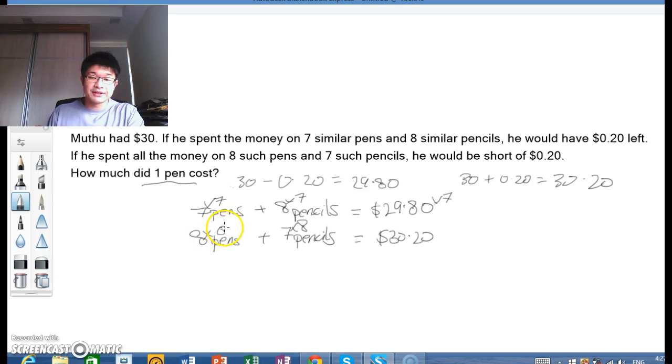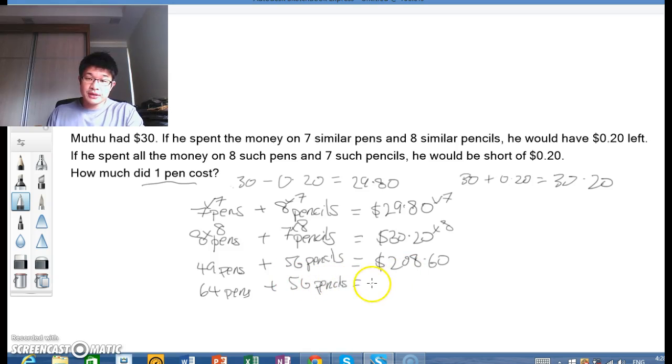So what you will get is 49 pens plus 56 pencils will be $208.60. Similarly, you will get 64 pens plus 56 pencils will be $241.60.